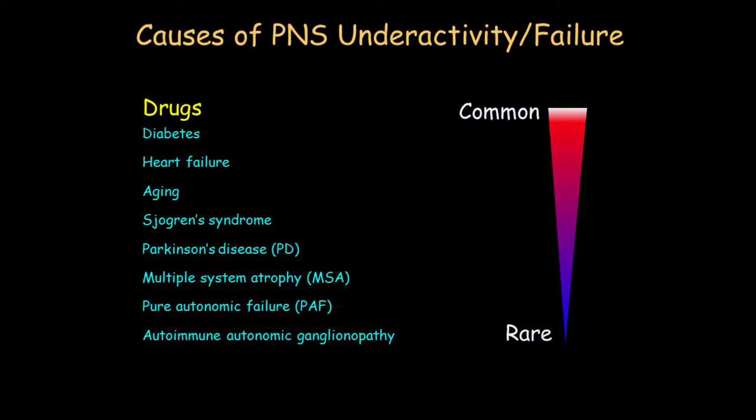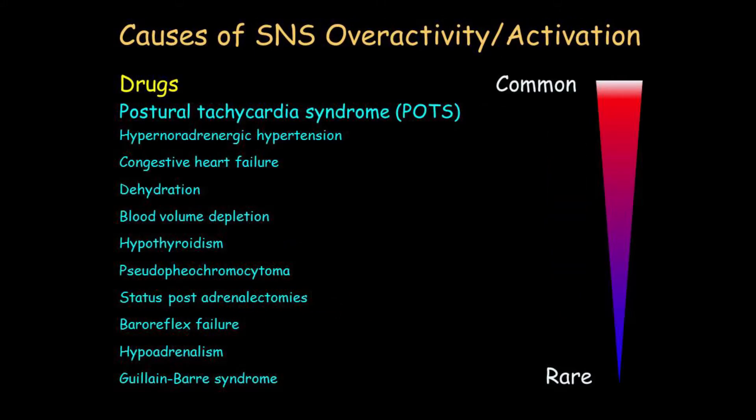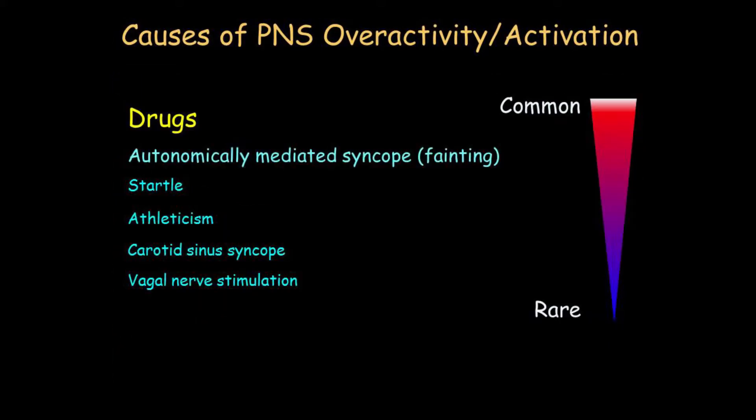What about parasympathetic nervous system underactivity? The most common cause is drugs. What about sympathetic noradrenergic system overactivity? The most common cause is drugs. So in somebody who's referred for dysautonomia, whatever that means, the first thing you do is get a complete record of all the drugs that the person is on and dietary supplements, because that may be the key to helping the patient.